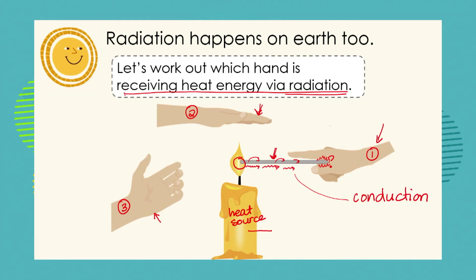Hand number two is above the candle flame but not touching it — there is a space between the heat source and the hand. The air particles near the flame start to move and spread out. Warmer air particles rise upwards in currents. So hand number two gets heat energy via convection.